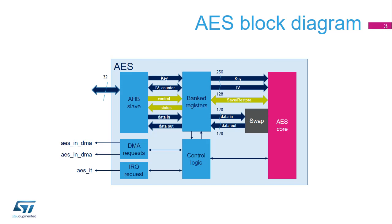Encrypting plaintext data into ciphertext and inversely decrypting ciphertext into plaintext requires intensive computing, which represents a huge workload when done entirely by software. The AES hardware accelerator lightens the CPU's workload by performing encryption and decryption operations in the AES core.